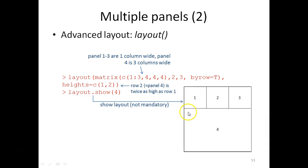The result looks like this with one, two, three from the first row in the matrix, and then four, four, four here. All three columns are combined into one single panel called four, and it's twice as high as the first row because we've defined heights as one for the first row and two for the second row.